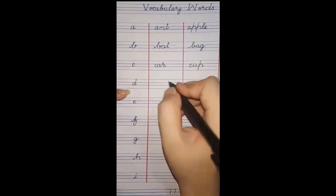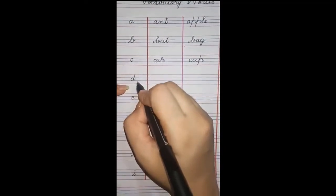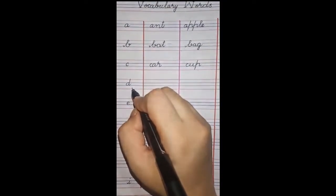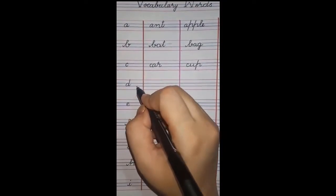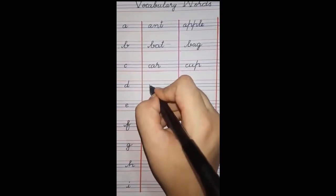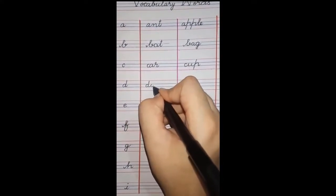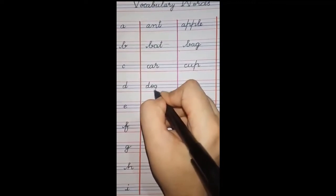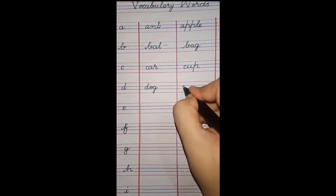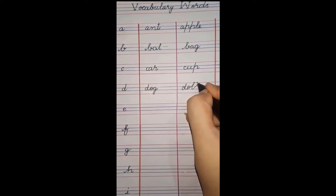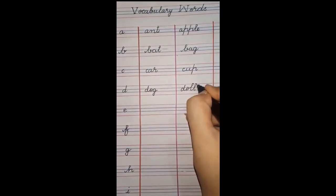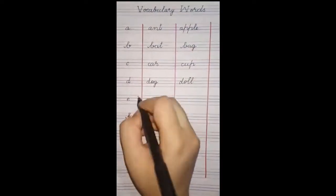Next is D. Next letter is D. D se two friends make karen. D - dog, D - door, D - doll, D - drum. Hum yahan par write karenge D - dog, D - doll. Doll kya hoti hai? Girls ko toh pata hai. Gudiya, yes.